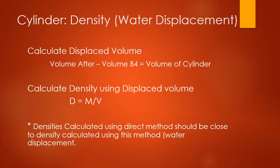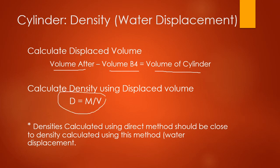Next, calculate the displaced volume — the volume change of the water. Take your after volume, once the cylinder was added, and subtract your before volume when it was just water in the graduated cylinder. That subtraction gives you the volume of the cylinder. Then on page 18, calculate the density of the cylinder again using the same density equation and the same mass from before, but using the new volume from water displacement. These densities and volumes should be very similar but not exactly the same.